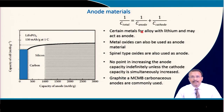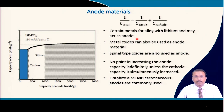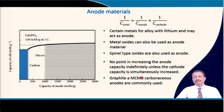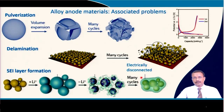Certain metals that form alloys with lithium may act as anodes, which you certainly know by now. Metal oxide can also act as an anode material, as I have explained in a case study. Spinel-type oxide can also be used as anode. Lithium titanium oxide is another example. And traditionally, graphite and MCMB carbonaceous material are commercially used as anode material. We will have a look at different anode materials available for lithium-ion batteries.